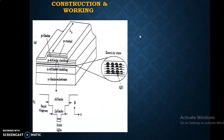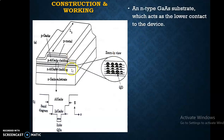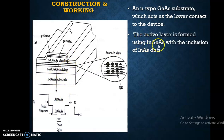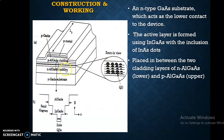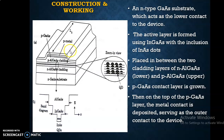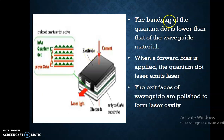Construction and working: The quantum dot laser structure is grown on an N-type gallium arsenide substrate, which acts as the lower contact to the device. Above this, an active layer is formed using indium gallium arsenide with the inclusion of indium arsenide dots — this is the quantum dot, indicated by the dark line in the diagram. This active layer is kept between two cladding layers of N-type and P-type aluminum gallium arsenide. Above this, a P-type gallium arsenide is grown, and on top, a P-type metal contact is deposited, acting as the outer contact. The band gap of the quantum dot is lower than that of the waveguide material, ensuring charge carrier confinement.